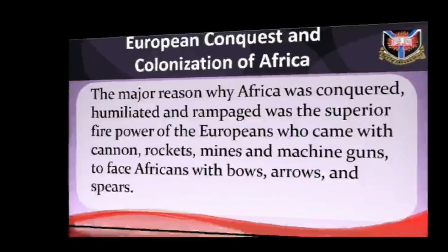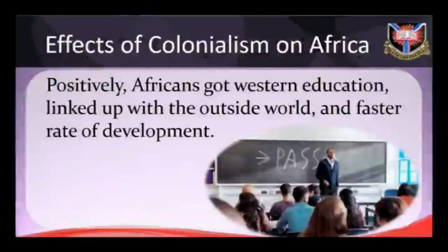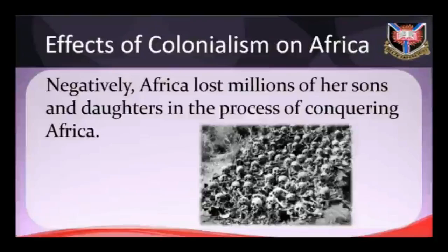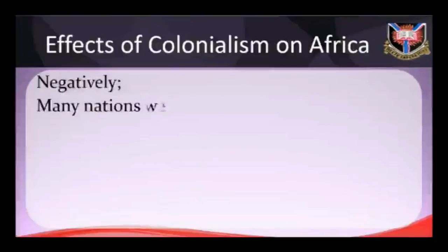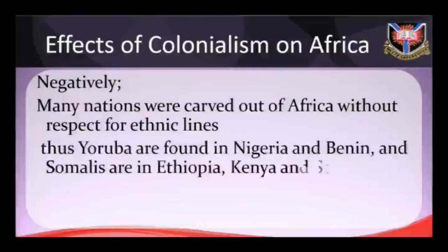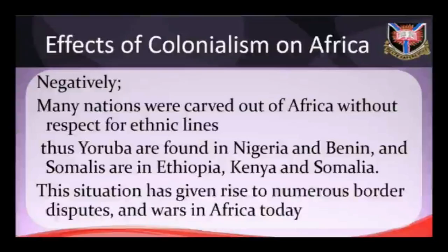Effects of Colonialism on Africa. On the good side, Africans gained Western education, were linked up with the outside world, and experienced faster rates of development. On the negative side, millions of African sons and daughters were lost in the process of conquest. Many nations were carved out of Africa without respect for ethnic lines — thus Yorubas are found in Nigeria and Benin, and Somalis are in Ethiopia, Kenya and Somalia. This situation has given rise to numerous border disputes and wars. The balkanization of Africa has weakened Africa in all spheres of life.